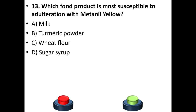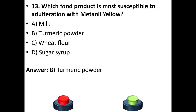Thirteenth question: Which food product is most susceptible to adulteration with metanil yellow? A. Milk. B. Turmeric powder. C. Wheat flour. D. Sugar syrup. Your answer is option B: Turmeric powder.